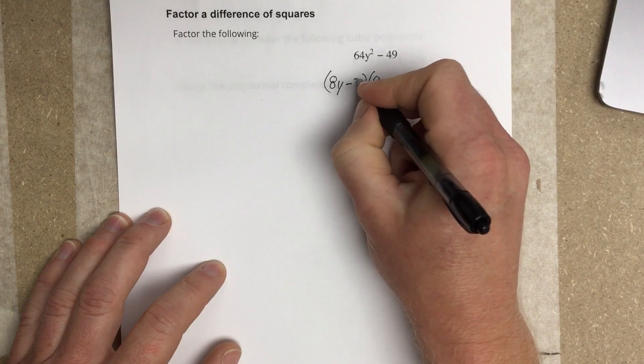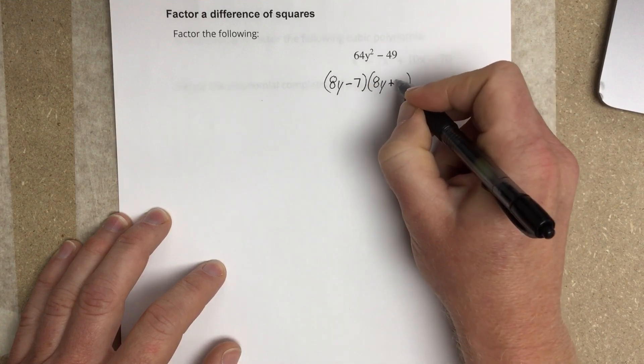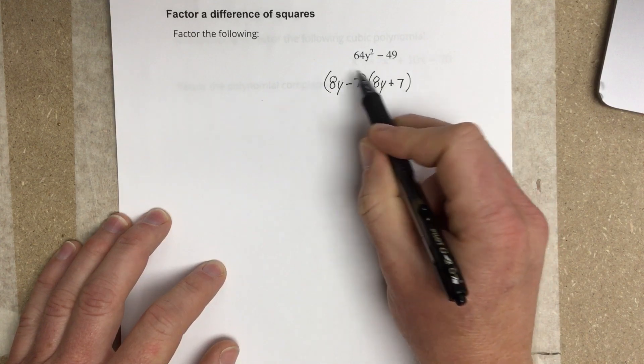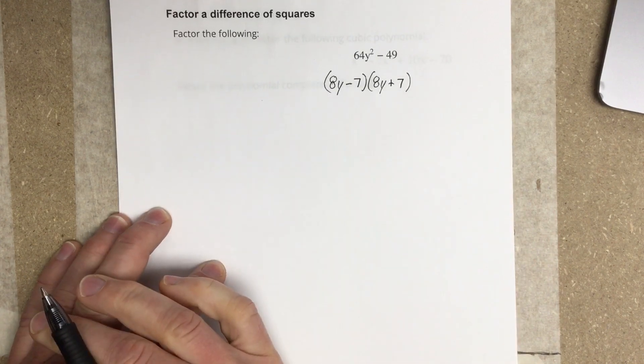So I have one term which is minus 7, and the other term is the conjugate, which is plus 7, so I don't get a middle term. You can see I get negative 56y and then positive 56y. I'm going to multiply those and those cancel.